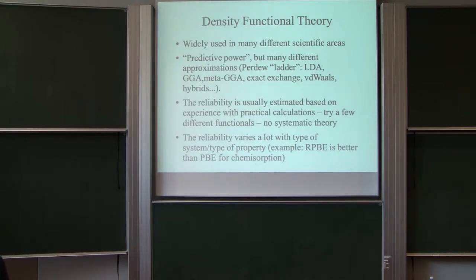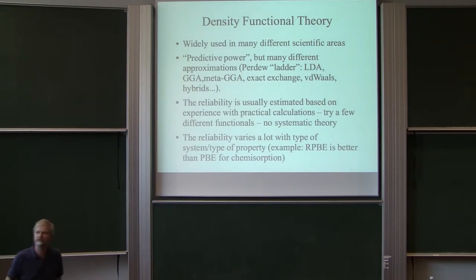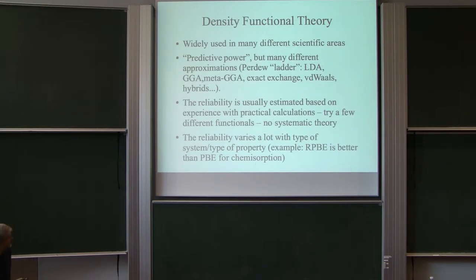As you know, DFT is used in many different scientific areas. We talk about predictive power, and it does have some predictive power. But there are many different limitations, and depending on which exchange-correlation functional you use, the quality of the calculation may vary a lot. How do you evaluate how good your functional is? Usually you try on a couple of systems and compare to experiment, or you ask somebody more experienced. There's no systematic theory for this.